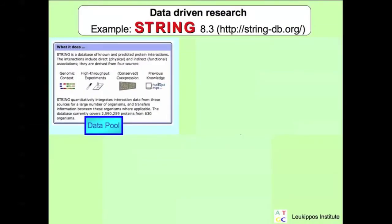This structure can, for example, be seen in the STRING software suite. The data pool STRING is a database of known and predicted direct or functional protein interactions. The database consists of 2,590,259 proteins and 630 organisms.